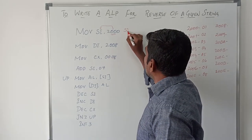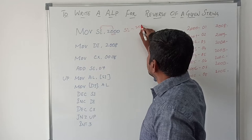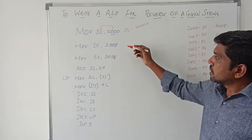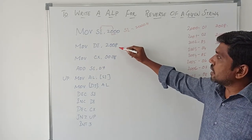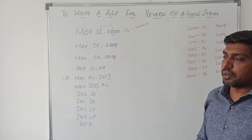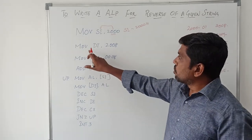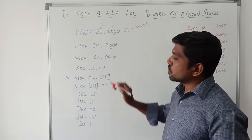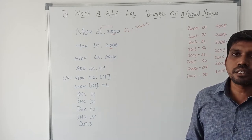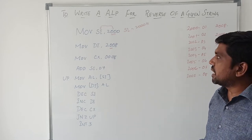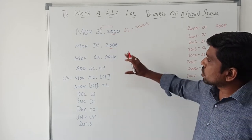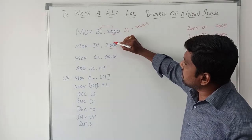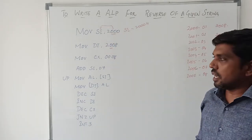Now the source index value is 2000H. Then you initialize the destination index memory location. MOV DI, 2008H. This 2008 is also a 16-bit immediate value. So after execution of this instruction, this 16-bit immediate value is transferred to DI.